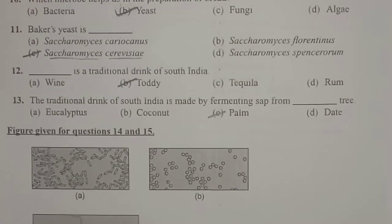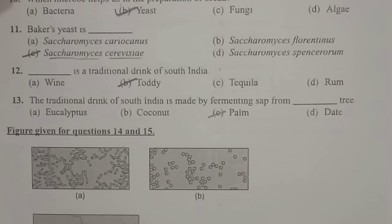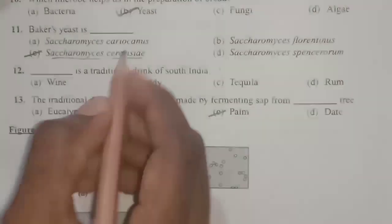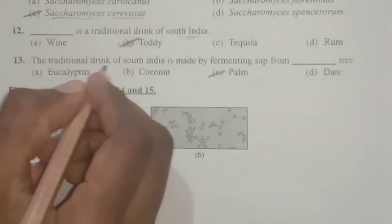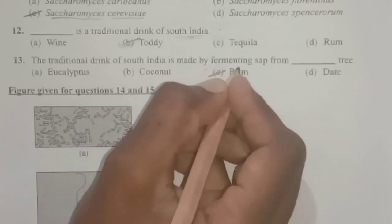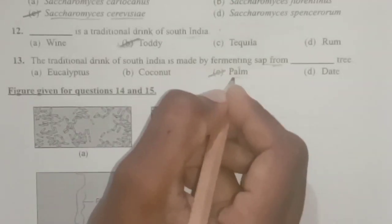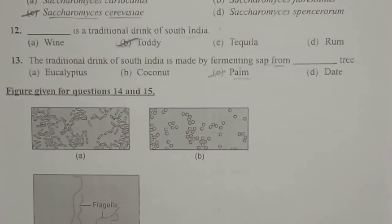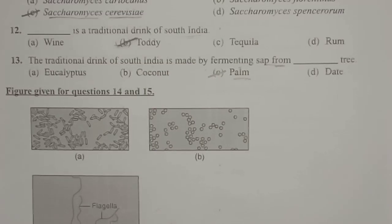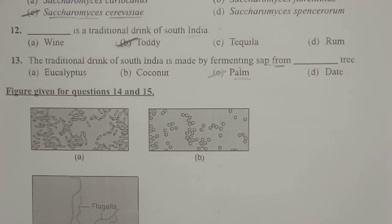Next: dash is the traditional drink of South India. Toddy is one of the traditional drinks used in South India, usually obtained from the sap of palm trees. Toddy is one of the oldest traditional drinks of South India. The next question adds that this traditional drink of South India is made by fermenting the sap from palm trees — the sap is collected and undergoes fermentation to form the traditional drink known as toddy.